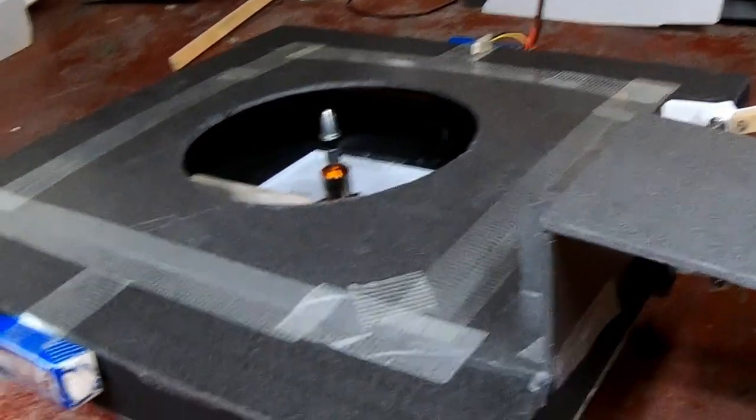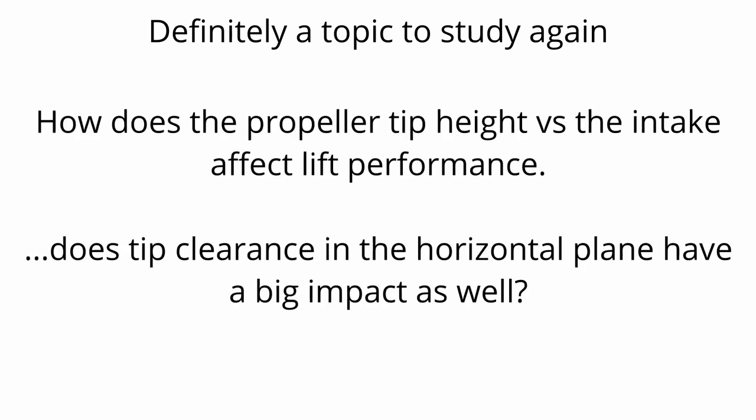The other change I made to the testing model between the past one and this one is I printed another mount and raised the propeller up. There's only about 4-5mm of difference, so it looked wrong when not powered with the propeller sticking up, but when it inflated it matched much more neatly. I think that's made quite a big difference. Another test I'm going to run is mounting the propeller at different heights to see how significant it is.